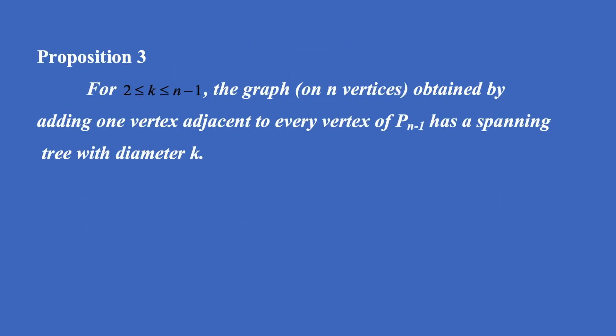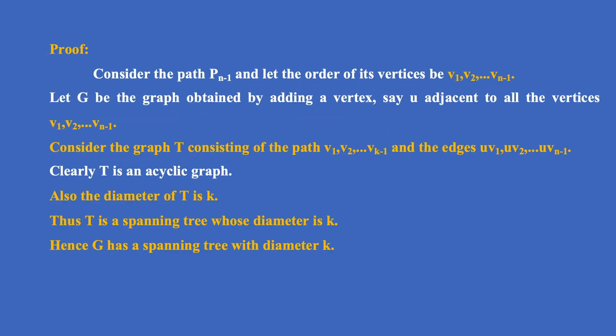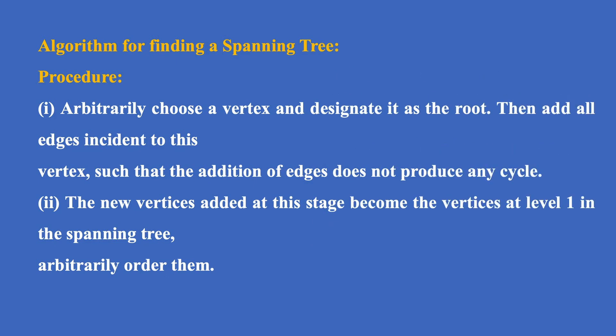Proposition 3: for 2 ≤ K ≤ N−1, the graph on N vertices obtained by adding one vertex adjacent to every vertex of P(N−1) has a spanning tree with diameter K. Proof: consider path P(N−1) with vertices V1, V2, ..., V(N−1). Let G be the graph obtained by adding vertex U adjacent to all V1, V2, ..., V(N−1). Consider graph T consisting of the path V1V2...V(K−1) and edges UV1, UV2, ..., UV(N−1). T is acyclic and has diameter K, so T is a spanning tree with diameter K. Hence G has a spanning tree with diameter K.